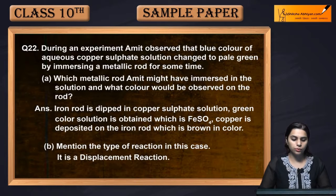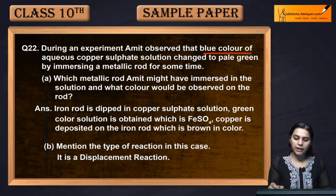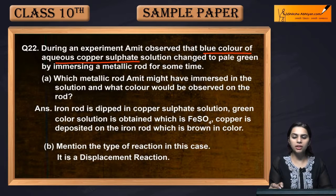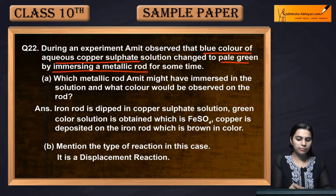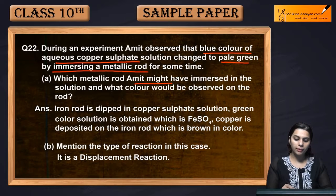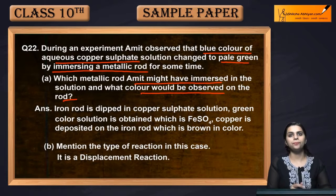Next question is question number 22. During an experiment, Amit observed that the blue color of copper sulphate solution changed to pale green by immersing a metallic rod for some time. Which metallic rod might Amit have immersed in the solution, and what color would be observed on the rod?